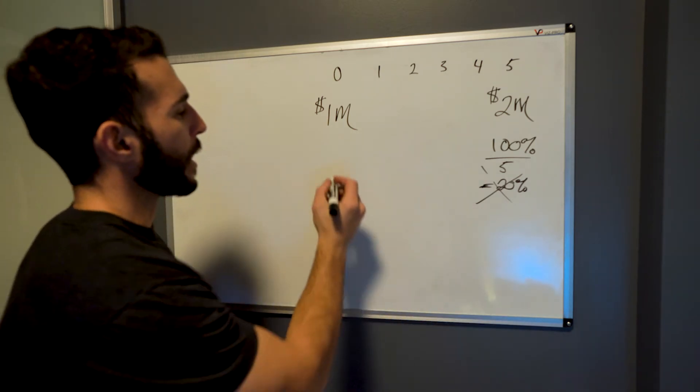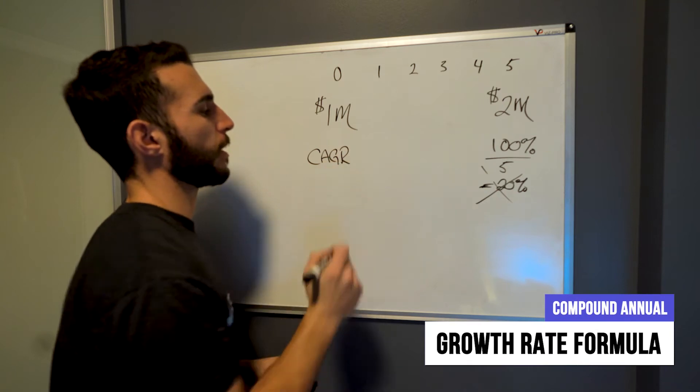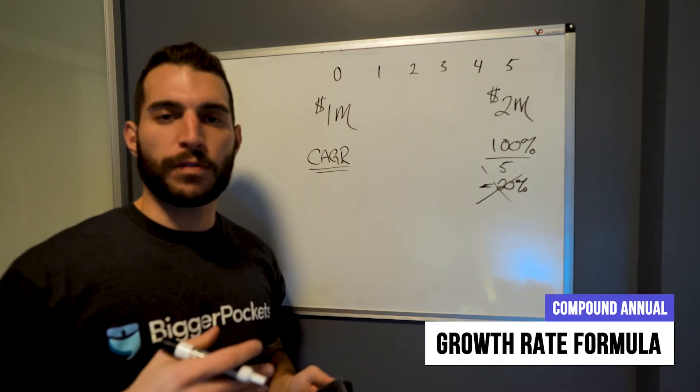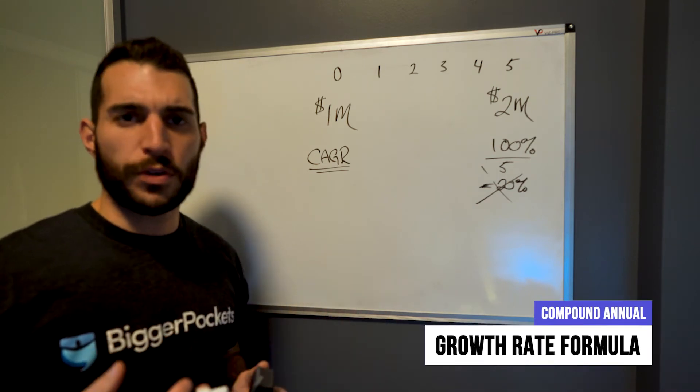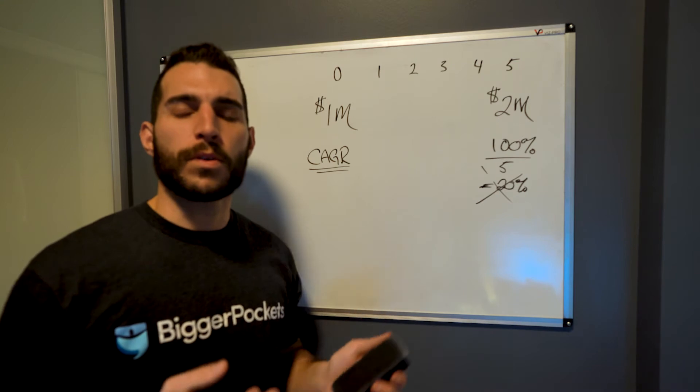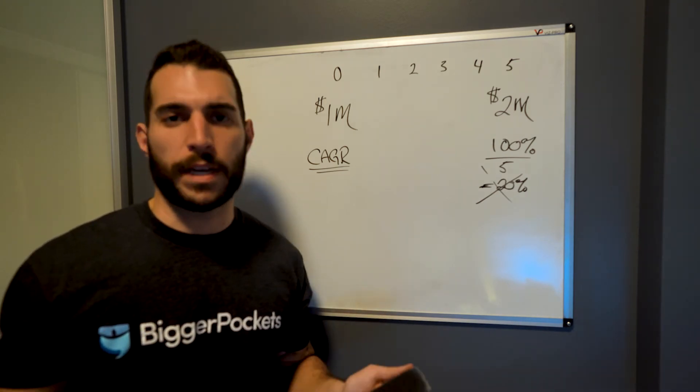And the way we avoid that is we have to use what's called the compound annual growth rate formula. This is the formula that I think people should look at when they don't have multiple cash flows going in and out. They're not trying to do just a simple cash on cash return. They're trying to figure out what their annualized return is for a particular project and maybe comparing it with something else.